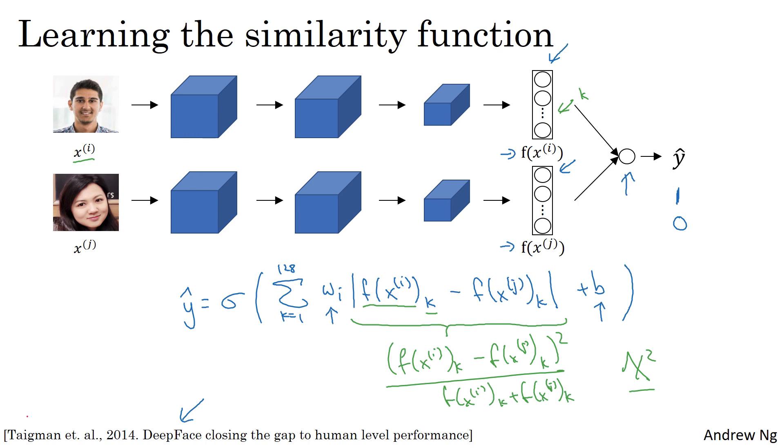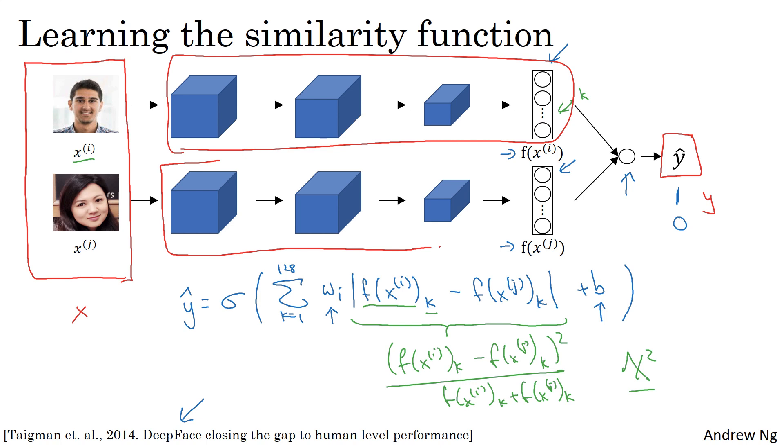In this learning formulation, the input is a pair of images, and the output y is either zero or one, depending on whether you're inputting a pair of similar or dissimilar images. You're training a Siamese network, so this neural network up here has parameters that are tied to the parameters in this lower neural network. This system can work pretty well.